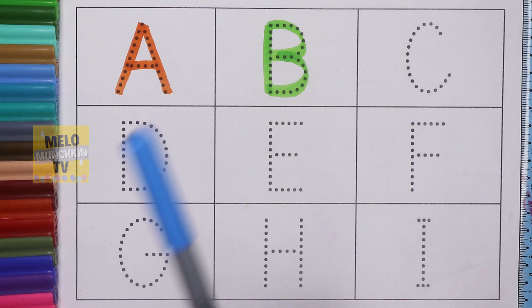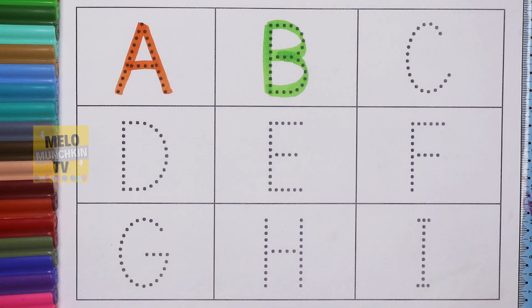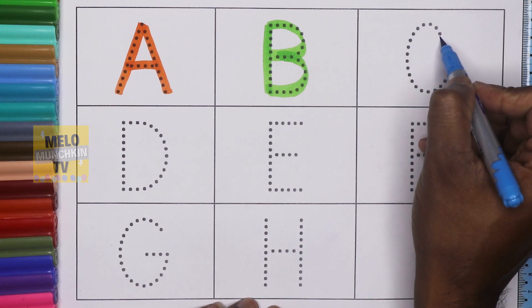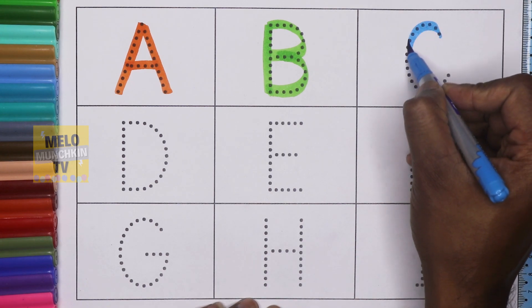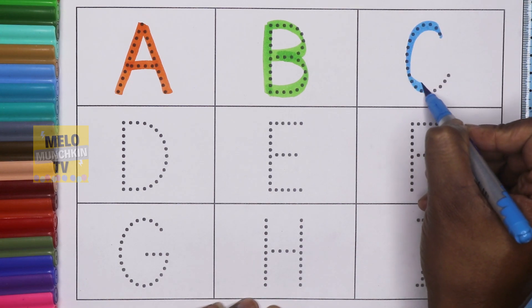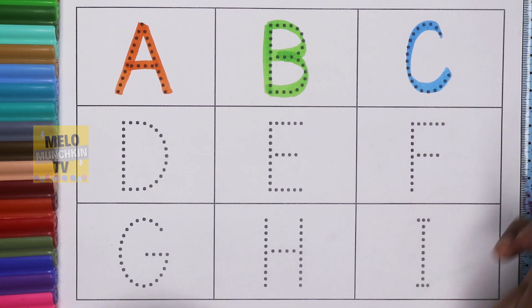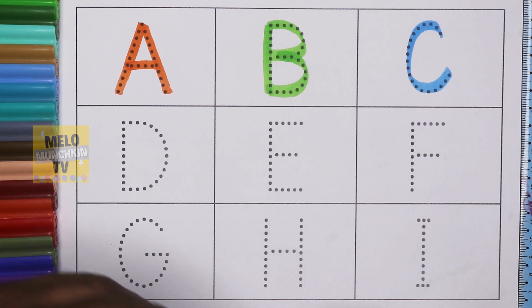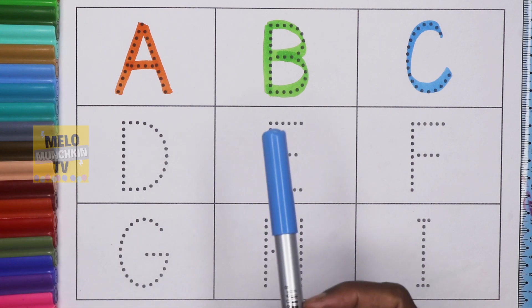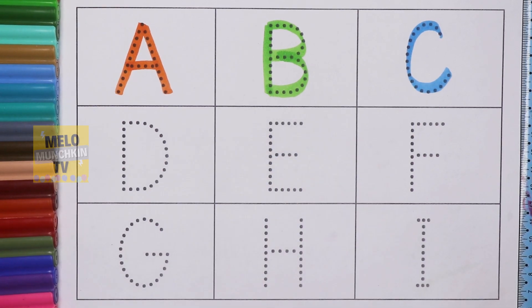Next I'll take blue color to write letter C. C for car. This is light blue color.